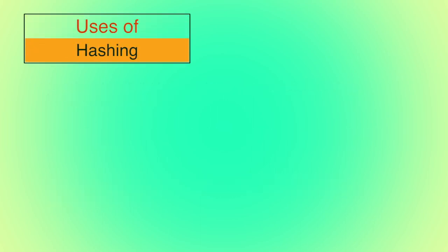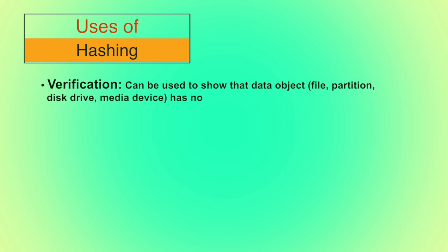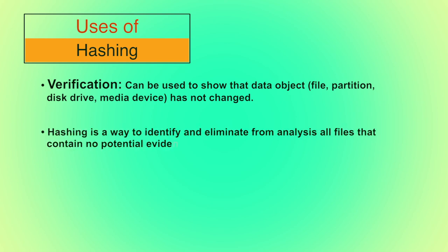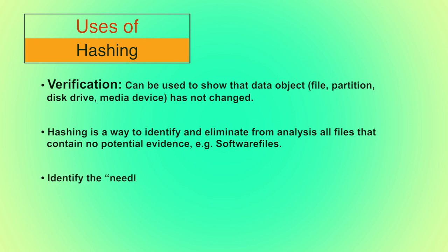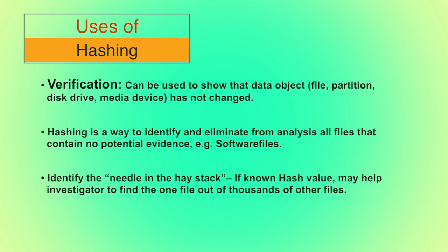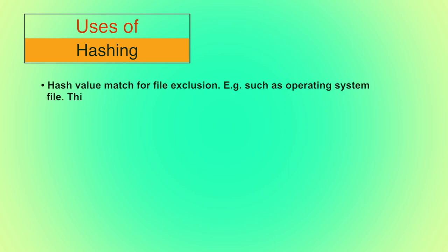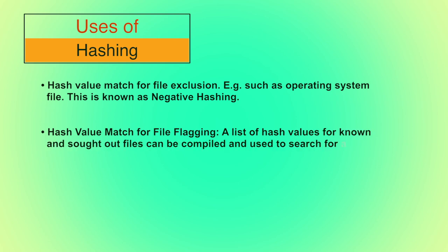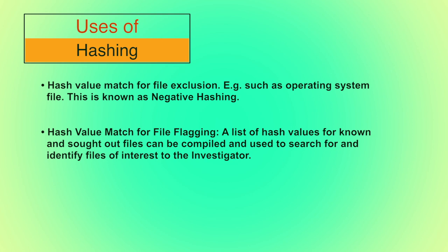What are the uses of hashing? We can use hashing for verification — it can be used to show that a data object has not changed, which specifically helps forensic experts while producing evidence in a court of law. Hashing is also a way to identify and eliminate from analysis all files that contain no potential evidence, for example software files. It is also used to identify the needle in the haystack — a known hash value may help an investigator find one file out of thousands. Hash value matching for file exclusion, such as operating system files, is also known as negative hashing. Hash value matching for file flagging involves a list of hash values for known and sought-out files that can be compiled and used to search for and identify files of interest to the investigator.